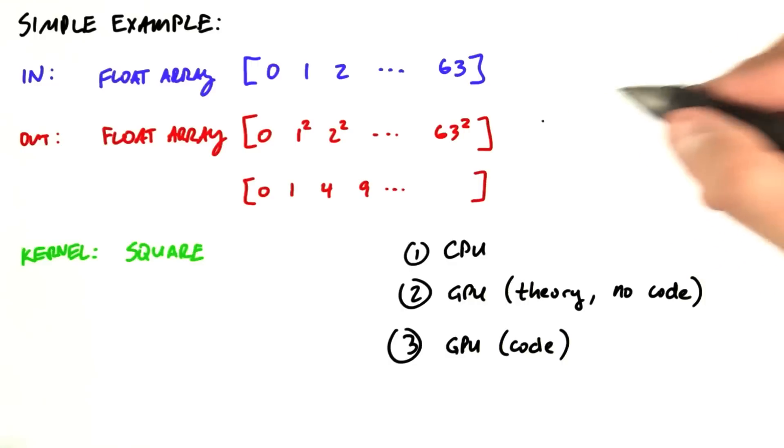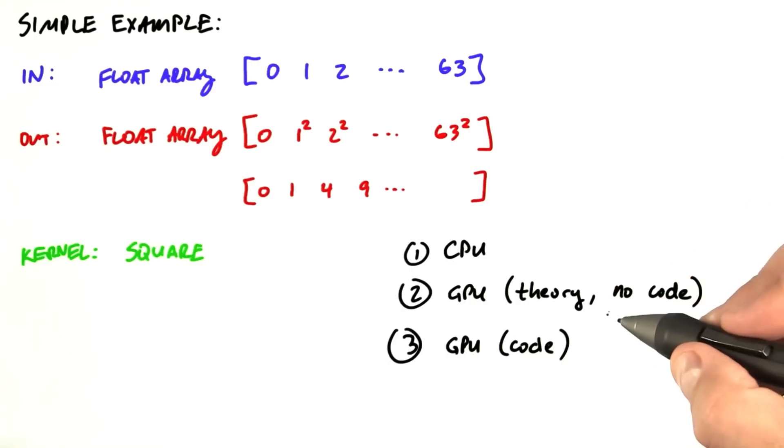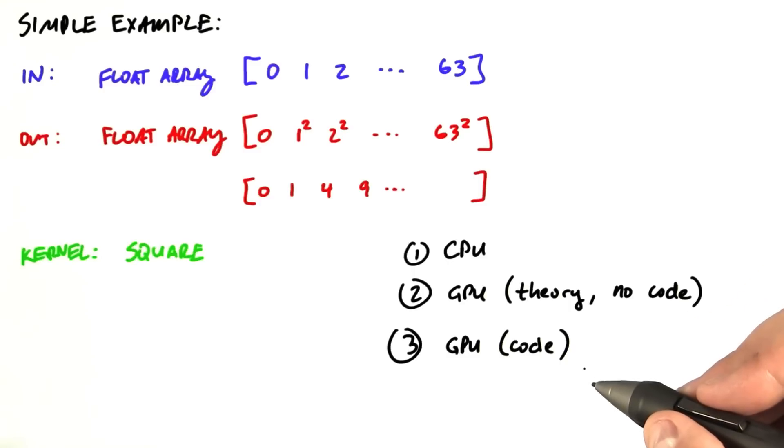We're going to do this in three steps. We're going to start by looking at how we'd run this code on the CPU. Then we'll talk about how we'd run this on the GPU without looking at code, instead just discussing what our code would do. Then we'll dive into what the code actually looks like.